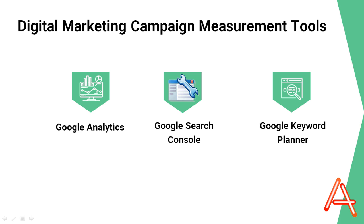The third tool we'll be discussing is Google Keyword Planner. Google Keyword Planner is a free tool that can help you research and identify the best keywords for your digital marketing campaigns. It allows you to see the search volume and competition for specific keywords, which can help you choose the right keywords to target in your campaigns. You can also get ideas for new keywords and see how they perform in different regions and languages.